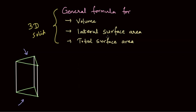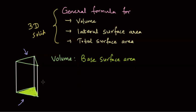Now how do we find the volume, lateral surface area, and total surface area of such solids? When we talk about volume, we first need to find the base surface area of the solid, then multiply that area by the height. The base could be triangular, circular, or rectangular, and with different solids, this base surface area keeps changing.